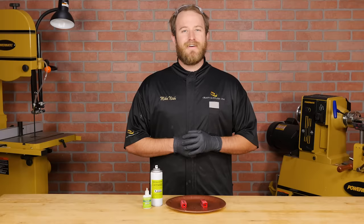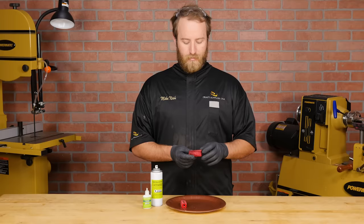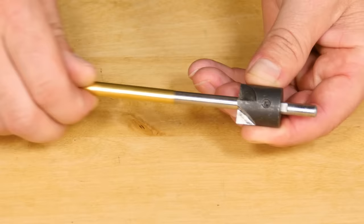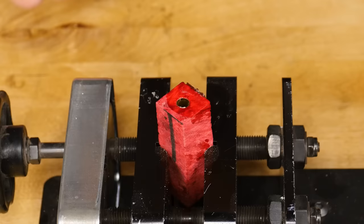After the glue cures you're going to need to square the ends of the blanks even with the brass tubes. This is critical for the pen components to fit together properly after turning. To make this step easy we'll use a barrel trimmer which is a mill mounted on a precisely sized pilot shaft that fits into the brass tube. In this case we'll be using a barrel trimmer with a seven millimeter pilot shaft.